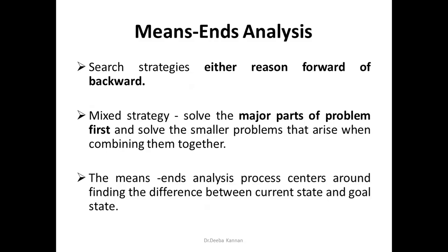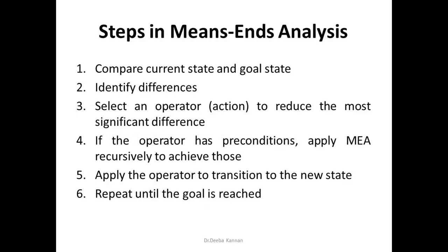By choosing the action that brings us to the goal faster, we proceed. For that action there will be certain preconditions, and if those preconditions are not satisfied, we find all the preconditions to be satisfied and then proceed. This is how means-end analysis works.